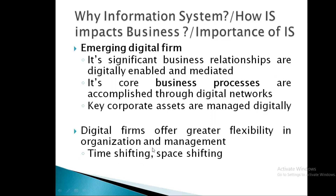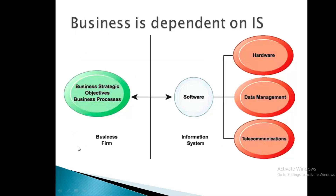Digital firms offer greater flexibility in the organization and management. Information ke bina we cannot think of growing. Aap kisi bhi time ki information chahate hain — for the last six months, for the last one year, for the last five years, for the last ten years of your company — whatever information you need, you can get it through the information system. However, manually, it is not possible to keep so much data in the form of notebooks. Business strategic objectives, business processes — ye teeno ke liye, means business strategies ko define karne ke liye, long term objectives ko define karne ke liye, business processes ko smoothly carry on karne ke liye — any business firm is using our information system. Information system ke major parts hain: software, hardware, data management that is DBMS systems, and telecommunications. They are both dependent and effectively working for the growth of any business these days.